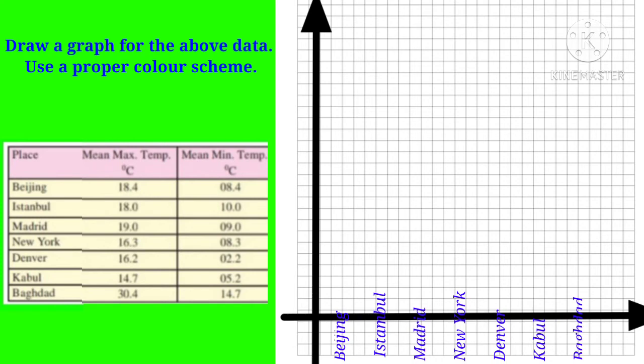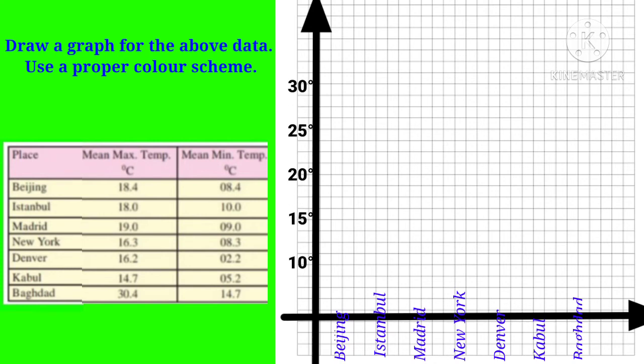On the x-axis we have Beijing, Istanbul, Madrid, New York, Denver, Kabul, and Baghdad. On the y-axis we have temperature ranging from 0 degrees Celsius to 30 degrees Celsius.